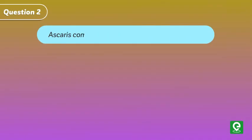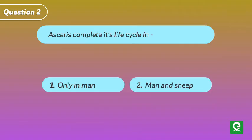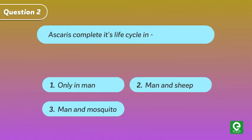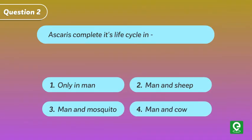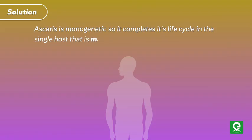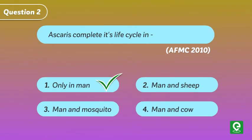Question 2: Ascaris completes its life cycle in — (1) Only in man, (2) Man and sheep, (3) Man and mosquito, (4) Man and cow. This question was asked in AFMC 2010. Ascaris is monogenetic, so it completes its life cycle in a single host, that is man. Hence, option 1 is correct.